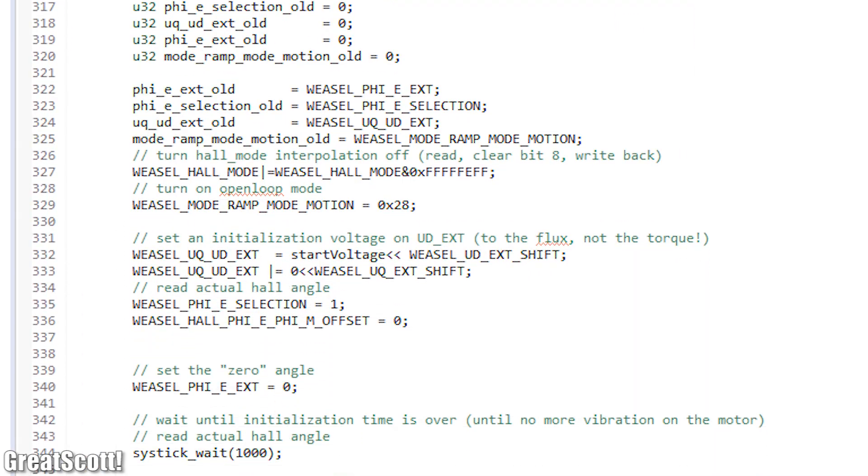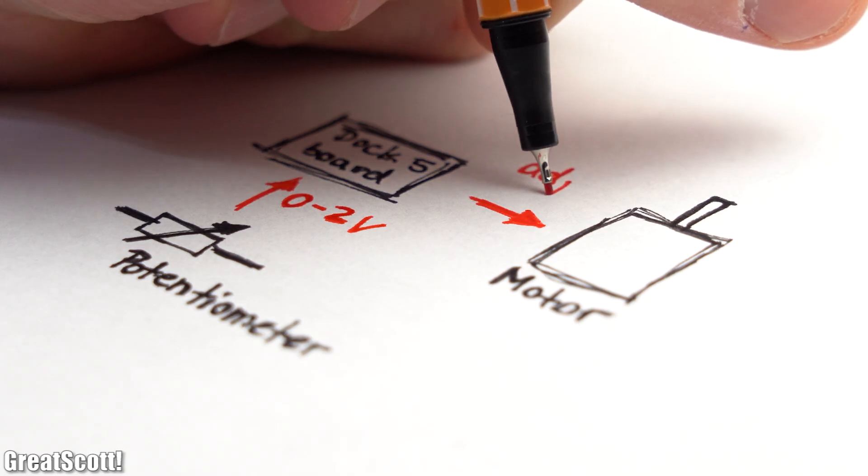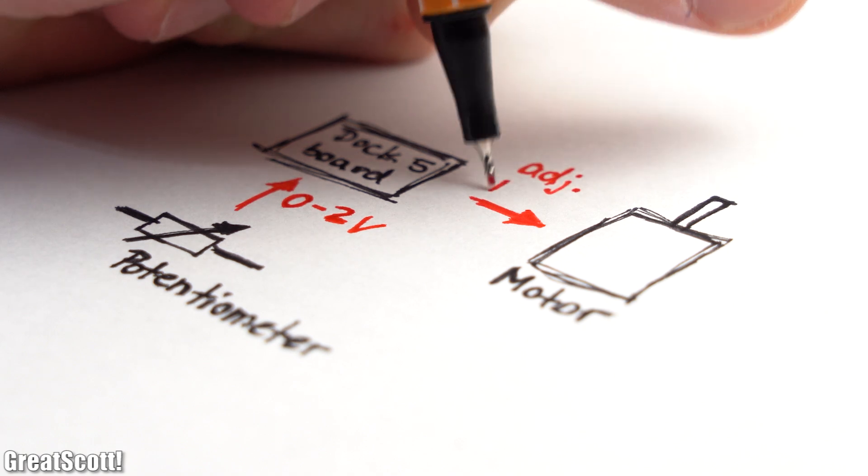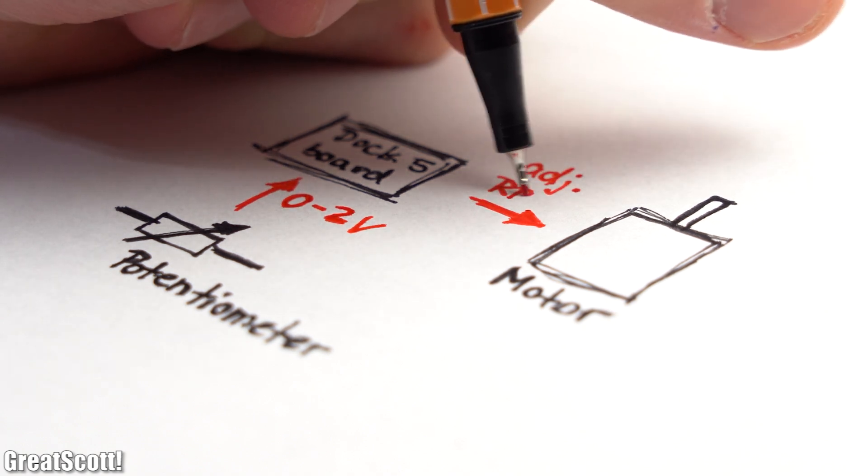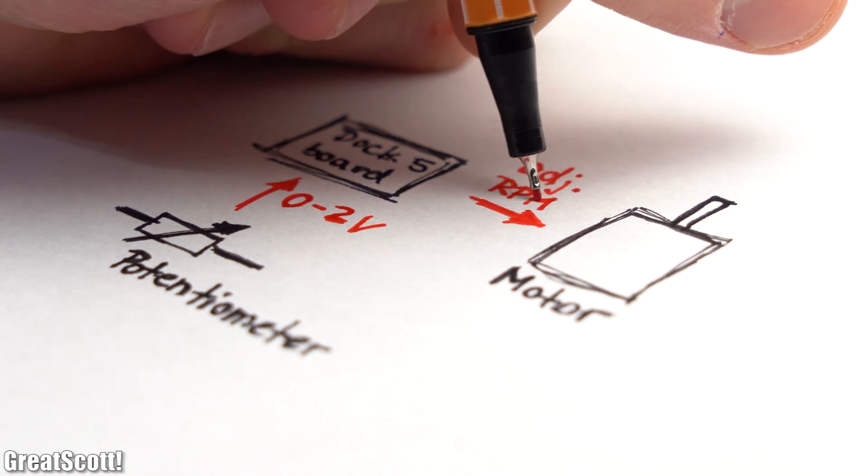Instead a Trinamic employee made it for me, and its function is to basically drive the motor with an adjustable RPM according to the position of a potentiometer.